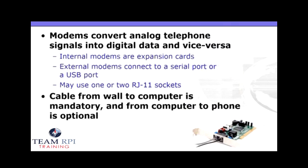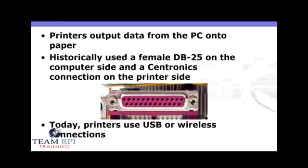Then you have your modem. The modem converts analog telephone signals into a digital data signal that the PC can understand. These modems are going to use an RJ11 connector. Typically, you're going to connect from the wall to the computer, and then from the computer possibly back to a phone, though that's not required. Older printers used a DB25 to connect to the PC; however, most of today's printers are using USB or possibly a wireless connection.